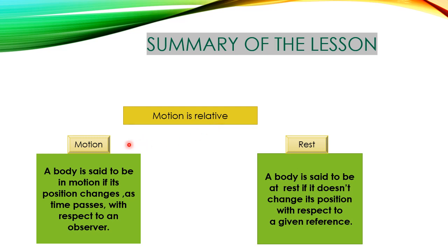A body can be in motion or at rest. It depends on the observer seeing this body, or we say the reference. A body is said to be in motion if its position changes as time passes with respect to an observer. It is said to be at rest if it doesn't change its position with respect to a given reference.